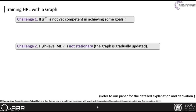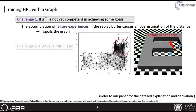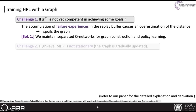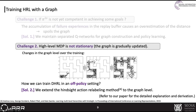Unfortunately, there are some difficulties in training an HRL framework with a graph. First, when the low-level policy is not yet competent in achieving some goals, the accumulation of failure experiences in the buffer causes an overestimation of the distance reconstructed from the queue value. To solve this, we maintain separate queue networks for graph construction and policy learning. Also, since the graph is gradually updated, the high-level MDP in our method is non-stationary, making it hard to train in an off-policy framework. To address this, we extended the hindsight action relabeling method to the graph level.